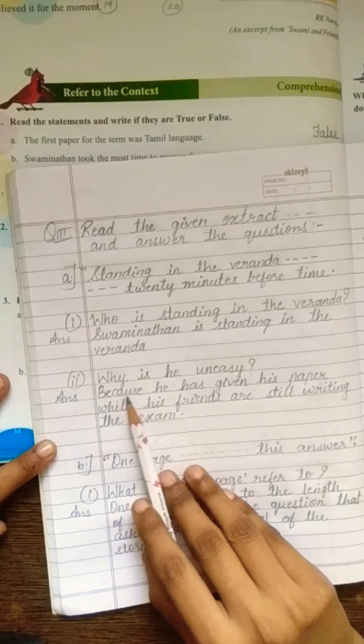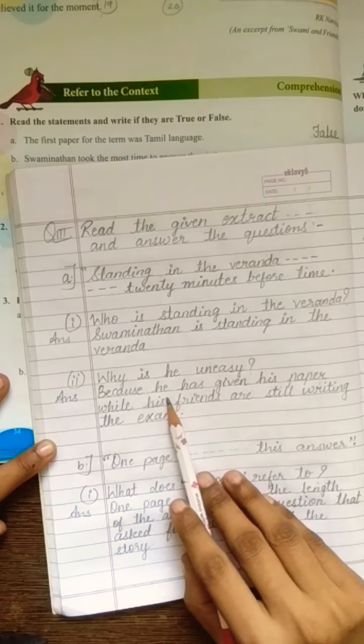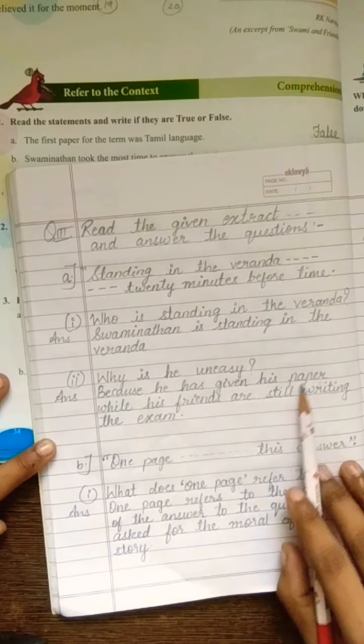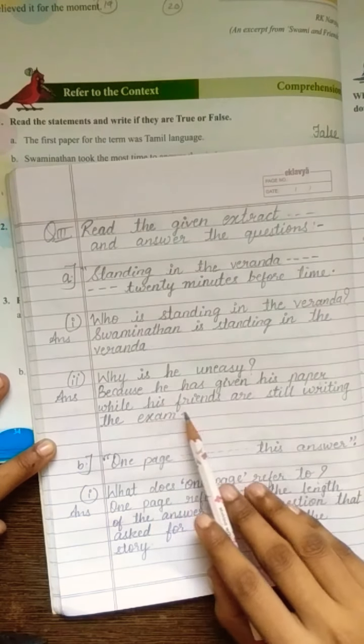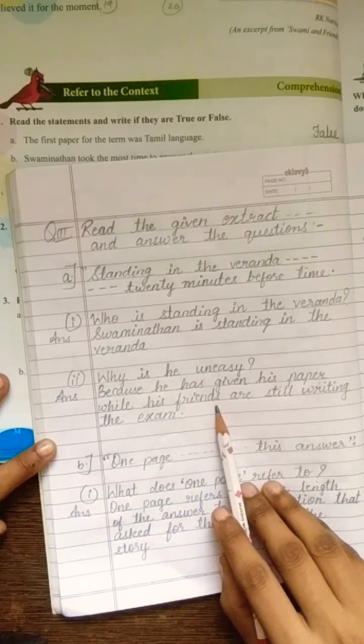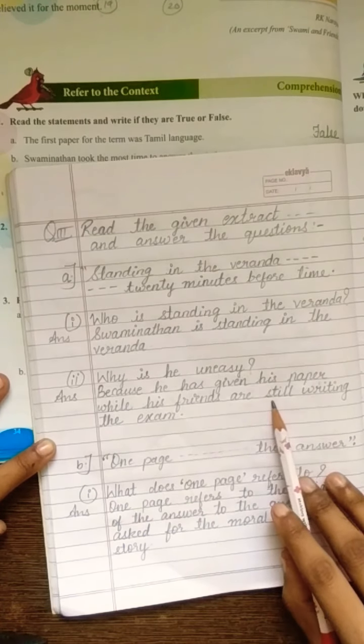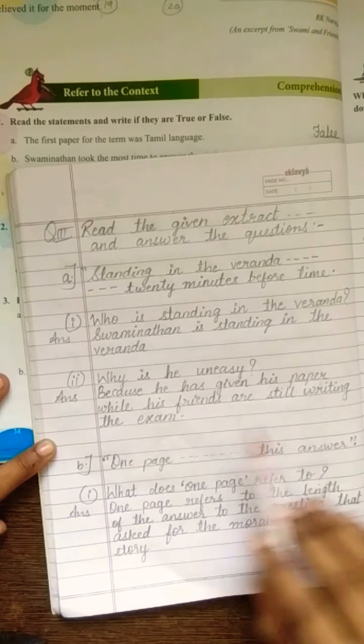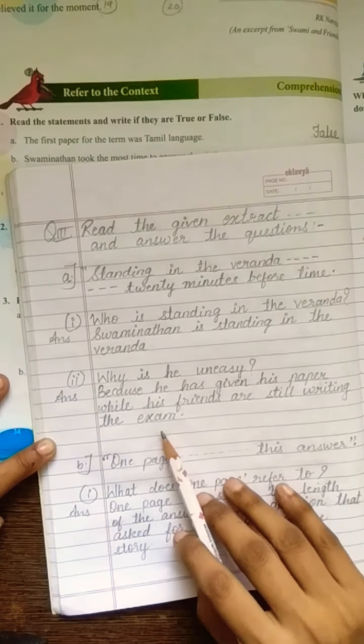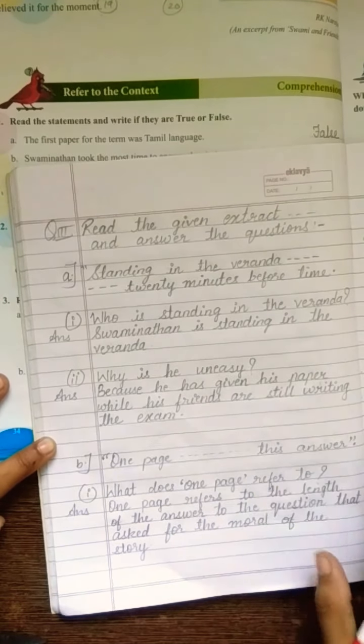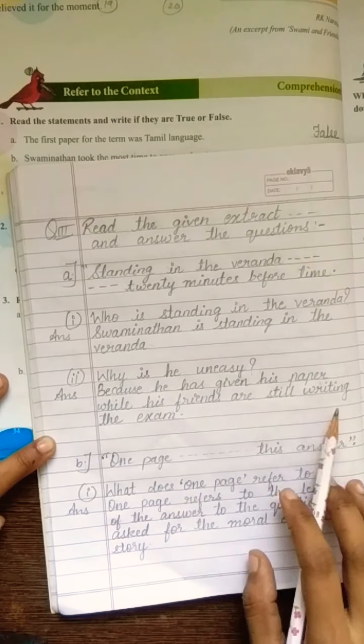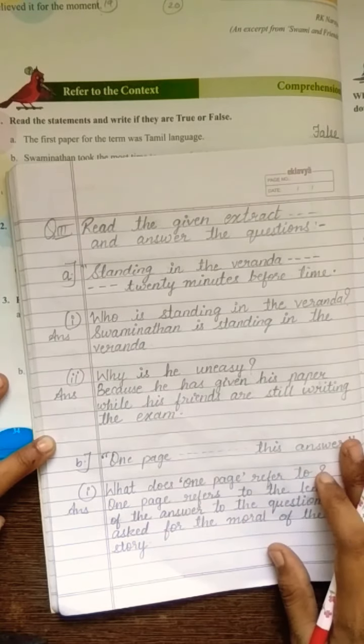So, your answer is, B-E-C-A-U-S-E. Because he has G-I-V-E-N given his paper. W-H-I-L-E while his F-R-I-E-N-D-S friends are S-T-I-L-L still W-R-I-T-I-N-G writing the E-X-A-M exam. Because he has given his paper while his friends are still writing the exam. Okay students,